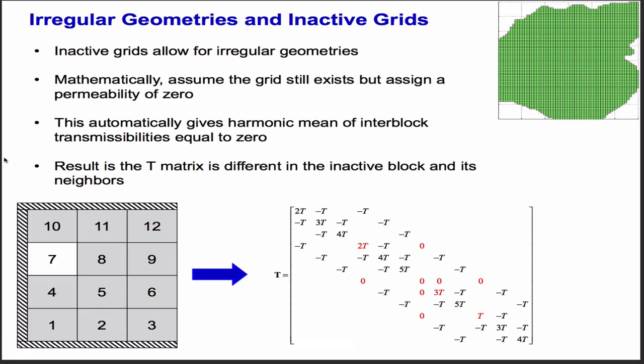So in that case, if you had something like that, you would get zeros in the matrix. Of course, for this to work, you have to compute the interblock permeabilities with a harmonic mean so that you get zero transmissibility across the boundaries there.